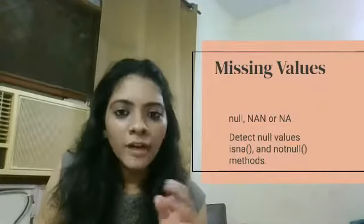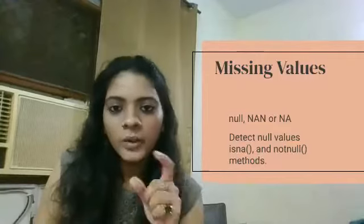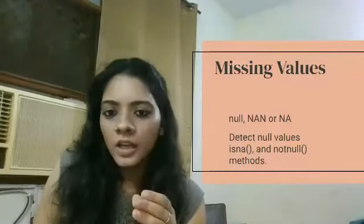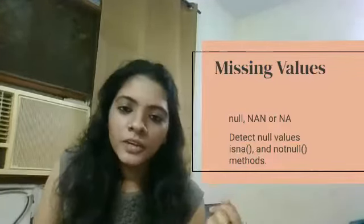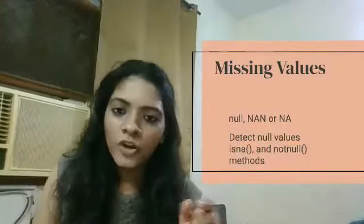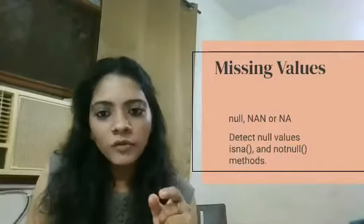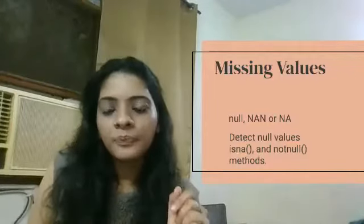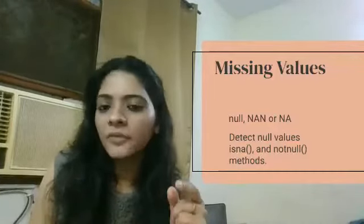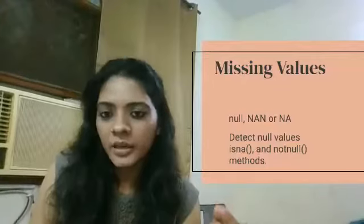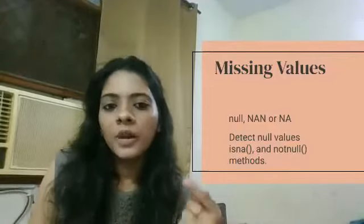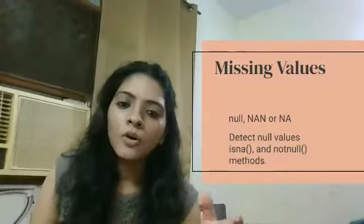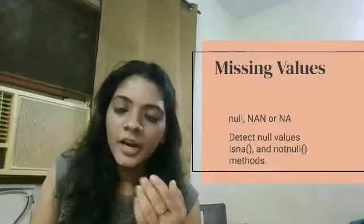There are three types of missing values we come across while exploring our dataset: NULL, NaN, or NA. We come across NaN most frequently. NaN refers to 'not a number' and we see it when we are using Python especially. So Python has these three types of missing values as you can see here.